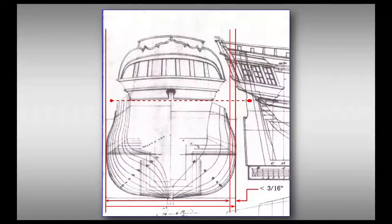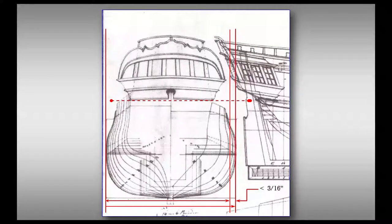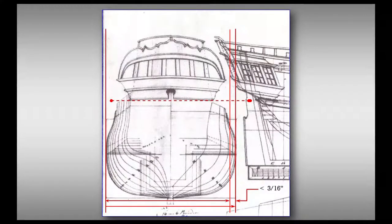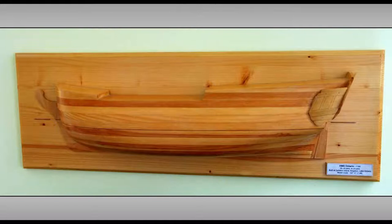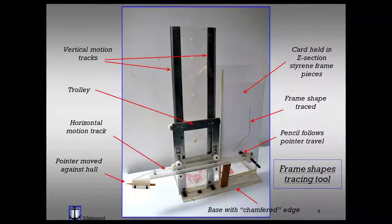A good friend still had his frame drawing machine and offered to help produce accurate frame shapes. This required first making a half model to use for template shapes. I made 17 photocopies of the body plan at 96.7% reduction and from these made templates at the station lines — nine forward and seven aft of the dead flat. These adjusted templates allowed me to make a half model which, when fair, gave me the accuracy required to make 35 sistered frames. I then used the frame machine to produce frame shapes.